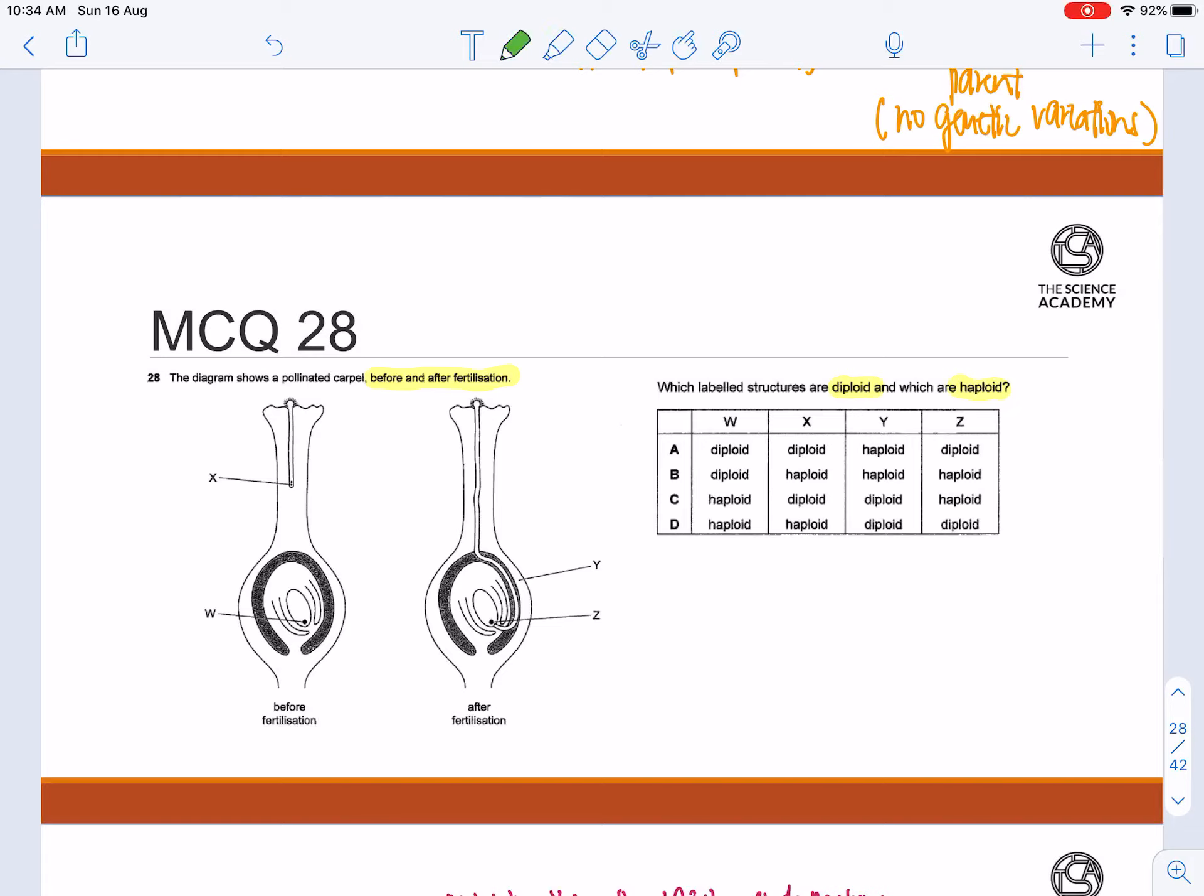Let's take a look at the figure itself. Over at X, before fertilization, we can see that over here, this is the pollen grain.